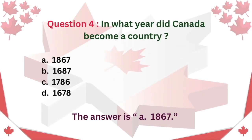Question 4: In what year did Canada become a country? A. 1867. B. 1687. C. 1786. D. 1678. The answer is A. 1867.